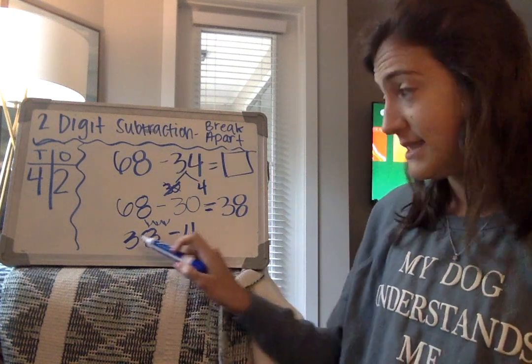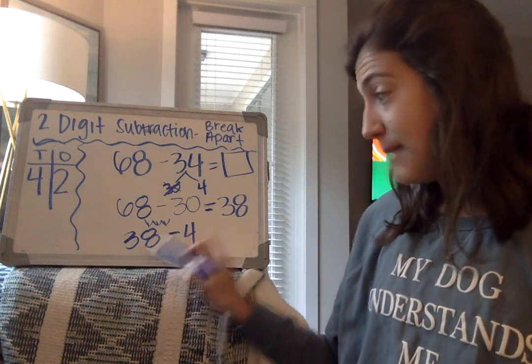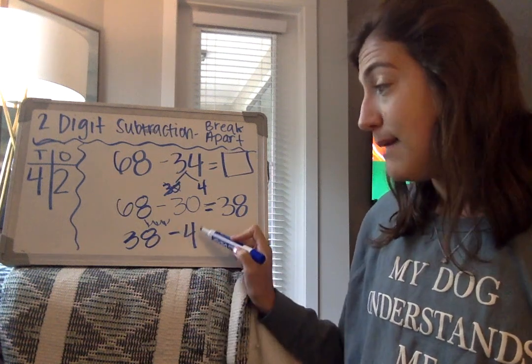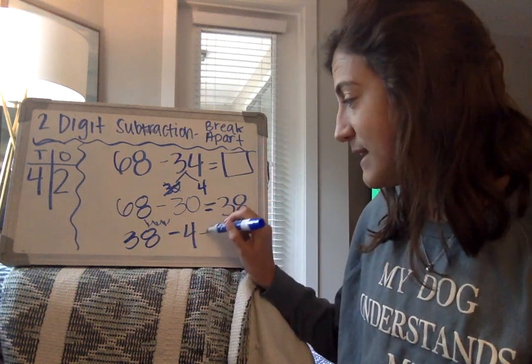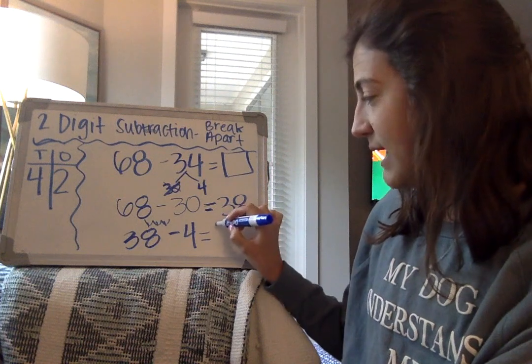So I know that 38 minus 4, I focus on my ones place. 8 minus 4 is 4. My tens place will stay the same. So I know that my answer is 34.